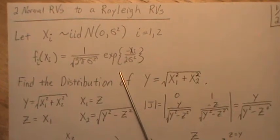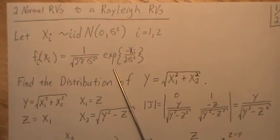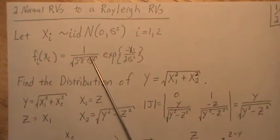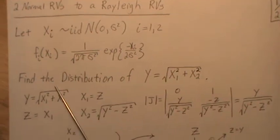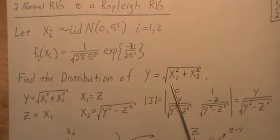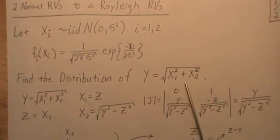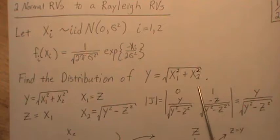Well, not the standard normal distribution. It's a normal distribution with mean zero. If it's standard normal, that sigma squared would be one. Now we want to find the distribution of the square root of x1 squared plus x2 squared.